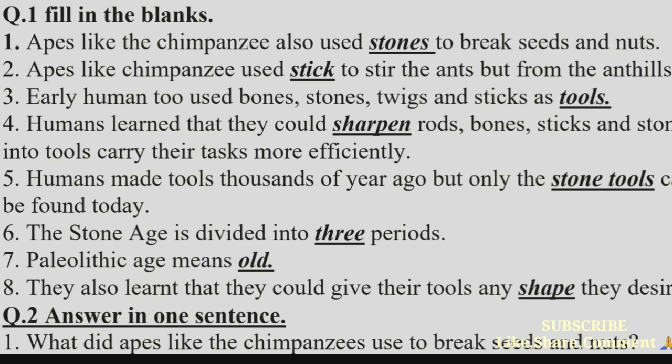(3) Early humans used bones, stones, twigs, and sticks as —. Answer: tools. (4) Humans learned that they could — stones into tools to carry out their tasks more efficiently. Answer: sharpen. (5) Humans made tools thousands of years ago, but only the — can be found today. Answer: stone tools.